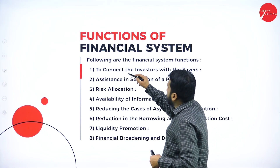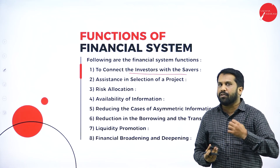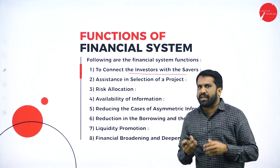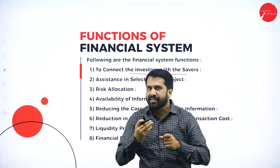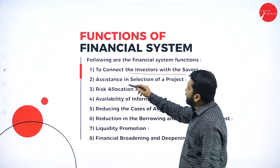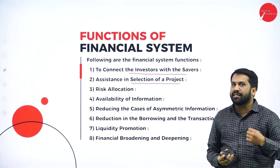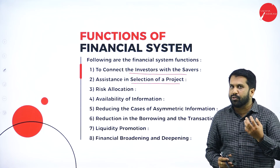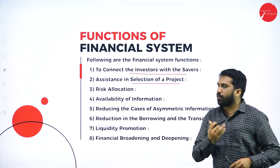The major functions of the financial system include: first, connecting investors with savers. For example, in the stock market you cannot go directly to a company and buy shares — you connect only through an agent. Second, assistance in selection of projects — they give analysis of the last five to ten years, future plans, and budgetary details so it will assist you in choosing the better project.